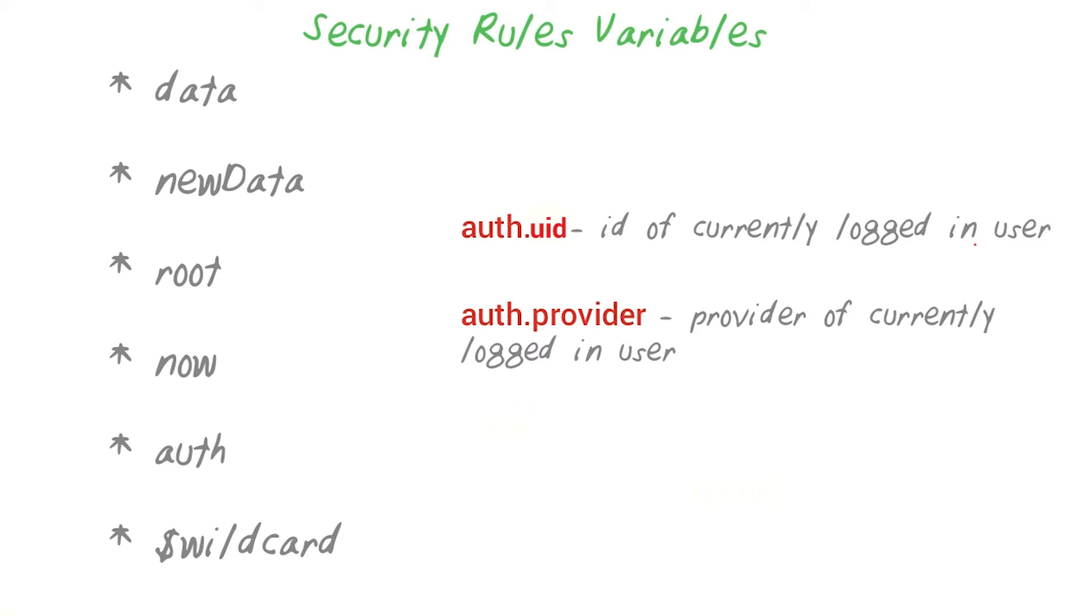If the user is not logged in, the auth variable is equal to null. This variable allows you to check whether someone is logged in and is a specific user.